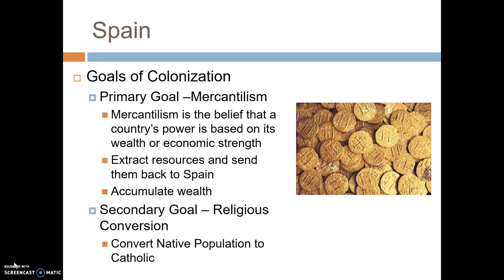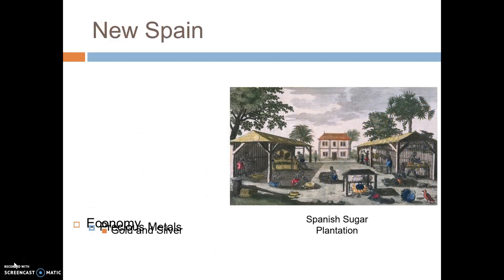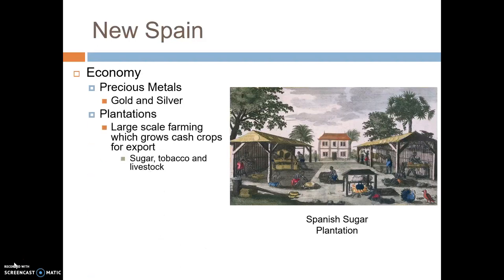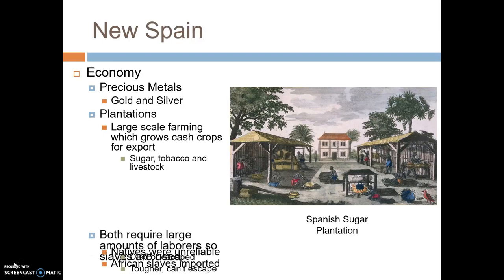Their secondary goal was religious conversion — converting the Native Americans, who were not Christians, into Catholics so that they followed the same religion. New Spain's economy was based in large part on accumulating precious metals like gold and silver, with lots of mining operations. In addition, the Spanish set up plantations — large-scale farms where cash crops were grown for export, typically sugar, tobacco, or cattle ranches where they would raise livestock.